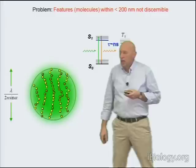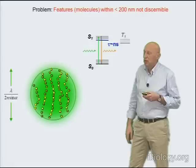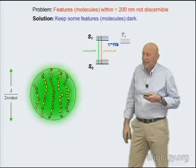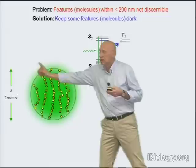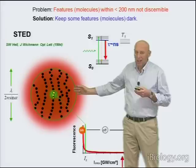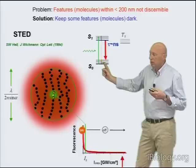If the problem really is that all the features are flooded at the same time with excitation light and hence give off light at the same time, a solution is to make sure that not all the features inevitably flooded with excitation light are in the end capable of emitting. This is exactly what we do in a STED microscope. In the STED microscope, we not only use a beam for exciting molecules focused into this 200-nanometer range, but we also use a beam of light typically shaped as a doughnut, whose role is to keep the molecules dark — to turn them off.